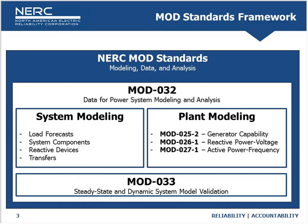MOD-26 and MOD-27 are specifically where we'll be focusing in this conversation. MOD-33 goes hand-in-hand with MOD-32; it's the system-wide model validation that the planning coordinators perform. When a large grid disturbance happens, they'll try to recreate it using their interconnection-wide models. MOD-26 and MOD-27 are more from a component or individual plant perspective, while MOD-33 is a validation piece from the system's perspective.